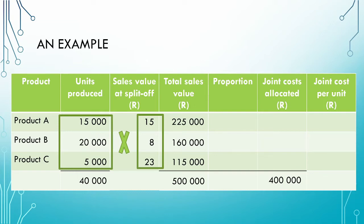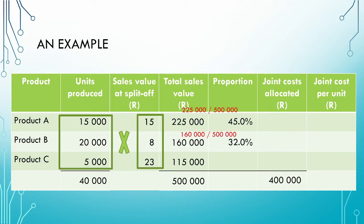We can now use this total sales value to calculate the proportions in which the joint costs should be split. Product A represents 225,000 Rand out of total sales of 500,000 Rand — that is 45%. Product B represents 160,000 Rand out of 500,000 Rand, which is 32% of total sales. Finally, product C represents 115,000 Rand of total sales at the split-of-point of 500,000 Rand, which is 23%.